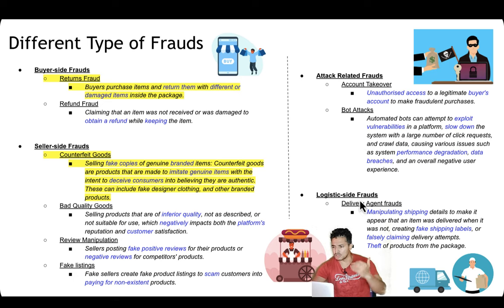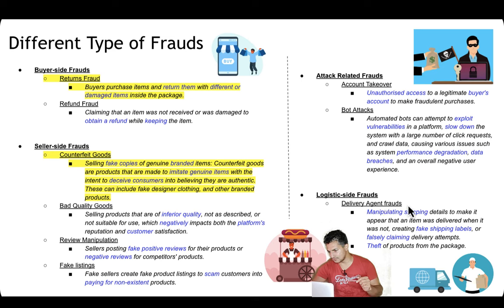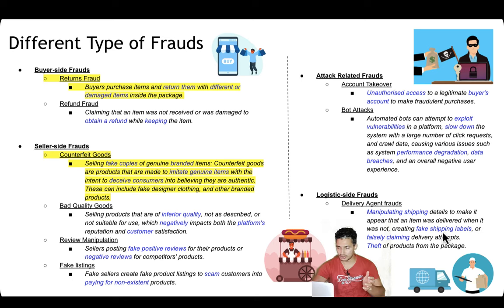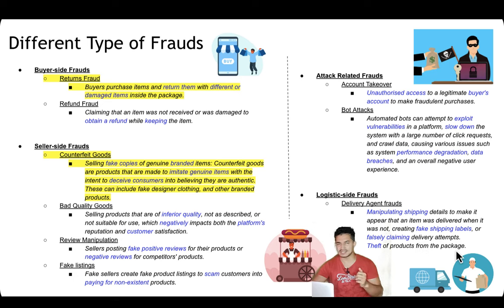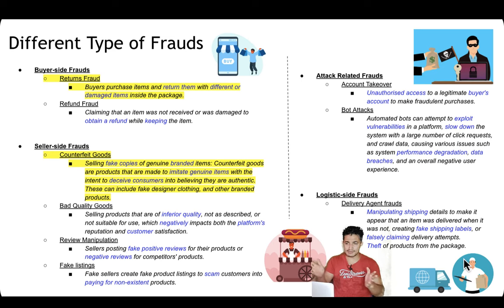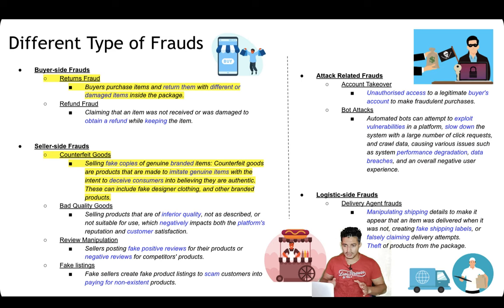There can also be logistics-side fraud. Delivery agent fraud: agents can manipulate shipping details to make it appear an item was delivered when it was not, create fake shipping labels, or falsely claim a delivery was attempted without actually attempting it. There can also be theft of products from packages — for example, if a package has three items, an item may be removed before delivery. So the types of fraud on an e-commerce platform like Amazon are: buyer-side fraud, seller-side fraud, attack-related fraud, and logistics-side fraud.